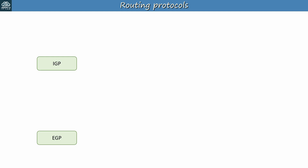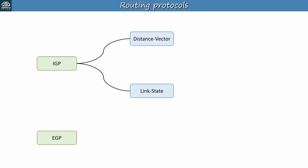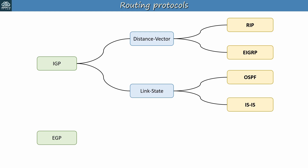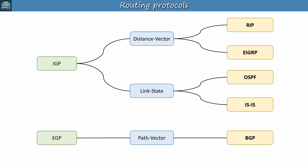Throughout the history of computer networks there have been many routing protocols, but today only a few are common. IGPs can be divided into two main categories based on the algorithm type they use: distance vector or link state. The two main distance vector protocols are RIP and EIGRP, and the two main link state protocols are OSPF and ISIS. In the modern day, there is only one EGP in common use: BGP, which uses a path vector algorithm. For the NCORE exam, you'll focus on EIGRP, OSPF, and BGP.